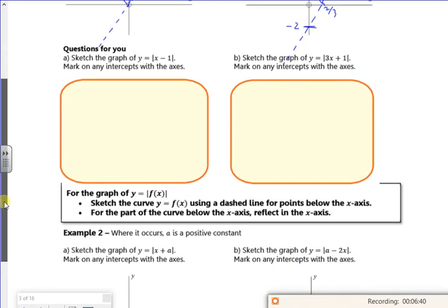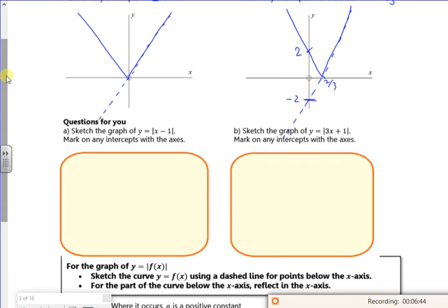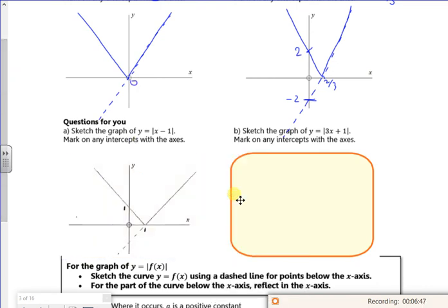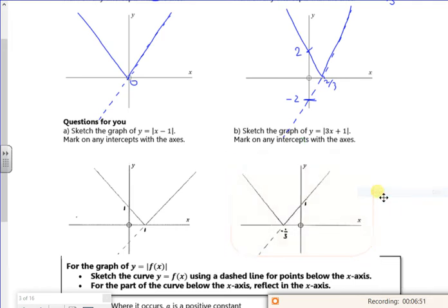You can graph it on the calculator to see if it's right, but that should be a plus 2 crossing there. So there's two questions for you to have a go at. Make sure you put on where it crosses on the axes.